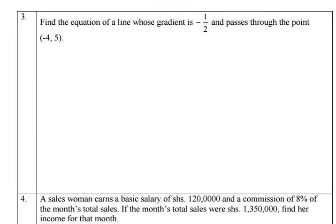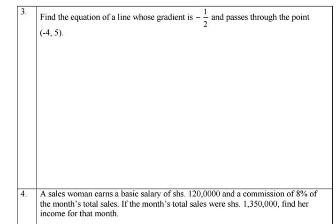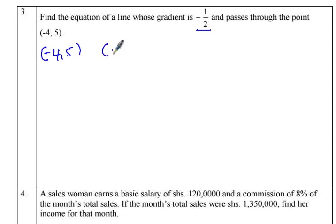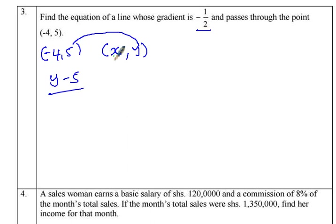Question 3 is talking about the equation of a line whose gradient is negative one-half, and it passes through the point (−4, 5). Given the gradient and a point, we can create another point. We have the known point (−4, 5), and on that same line we call another point (x, y). By definition of gradient: change in y values over change in x values, so (y − 5) divided by (x − (−4)) equals negative one-half.